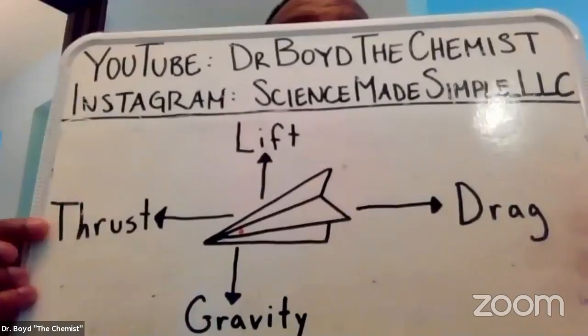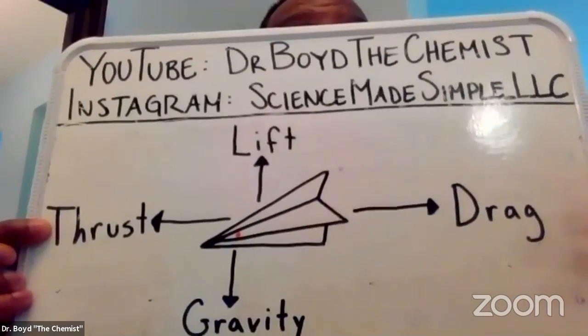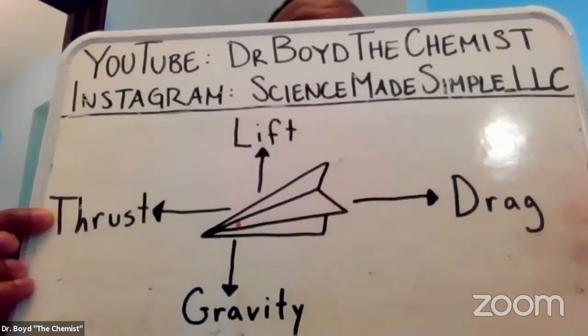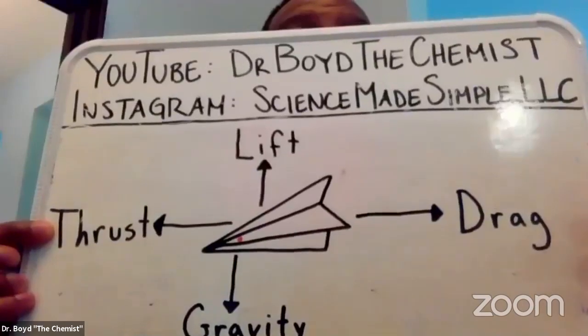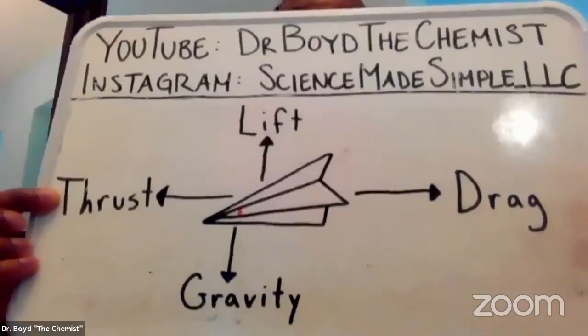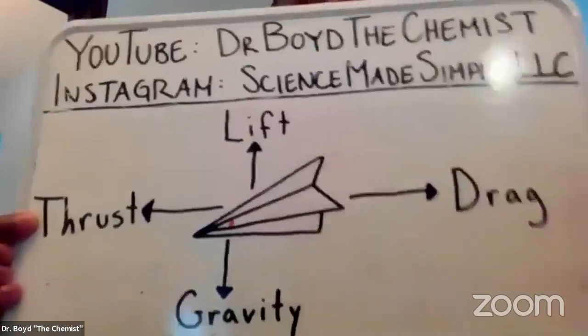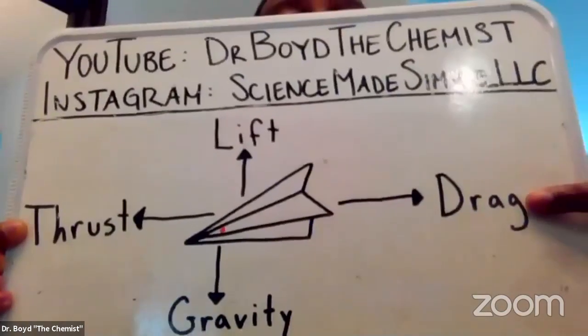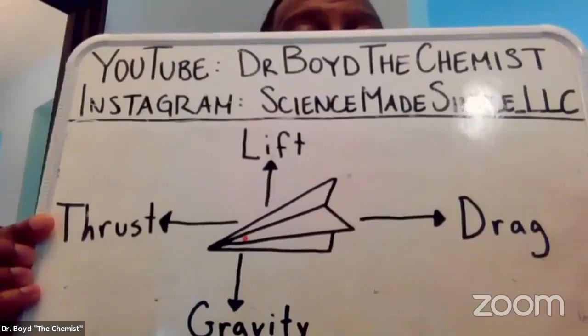You'll also notice this force here: thrust. Thrust is the forward force of an airplane. You get the thrust when the airplane — if it's a paper airplane — when you toss it. And then there's this other force: drag. Drag is opposite of thrust. So those are the four forces that are involved in flight.